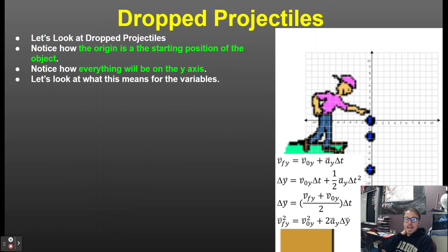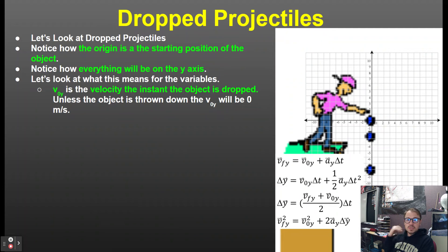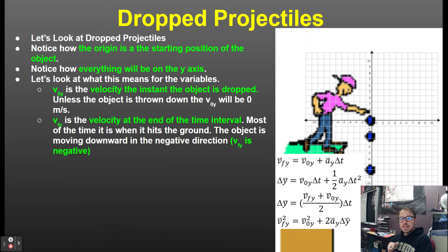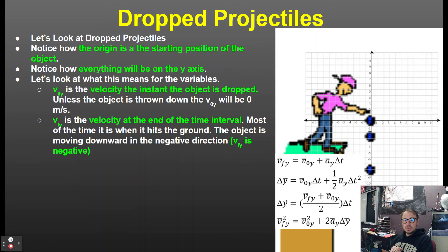Everything's on the y-axis. Let's look at what that means for the variables. v₀y is the velocity the instant the object is dropped — unless the object is thrown down, that initial velocity at time zero is zero meters per second. It's at rest the instant you let an object go. The final velocity v is the velocity at the end of the time interval, and most often represents when it hits the ground.